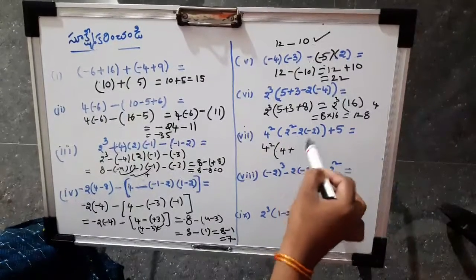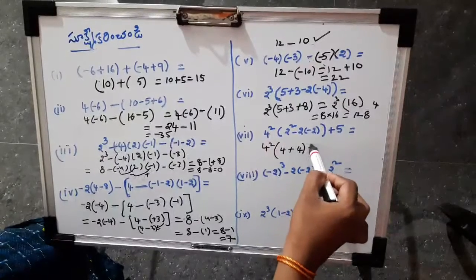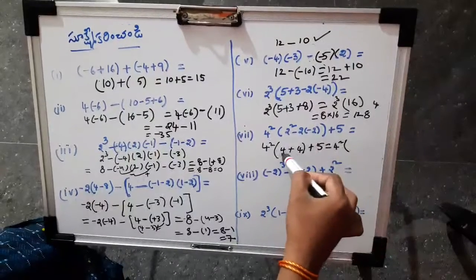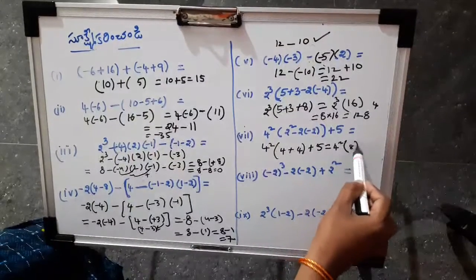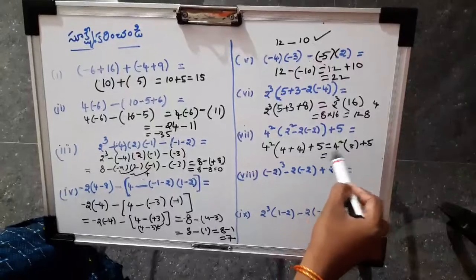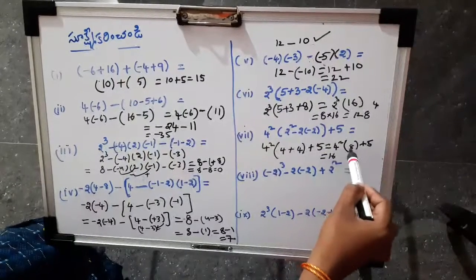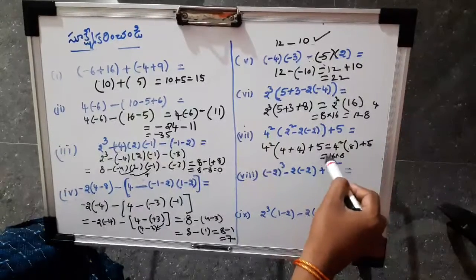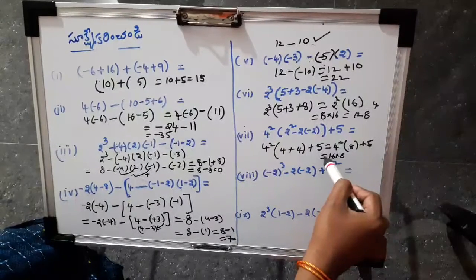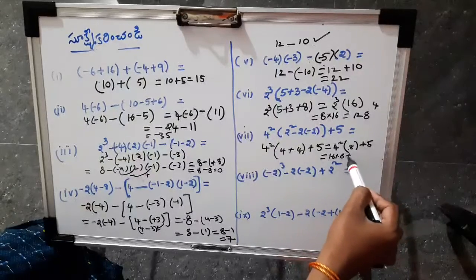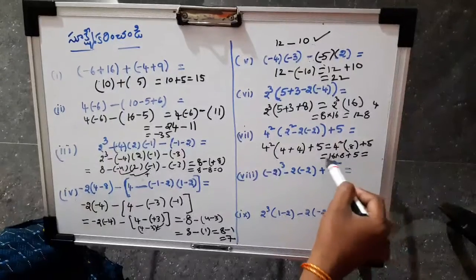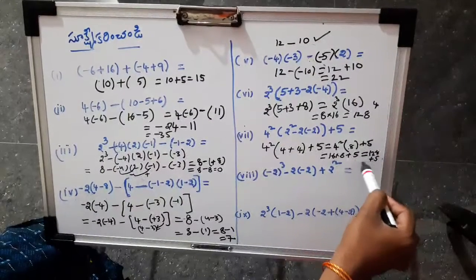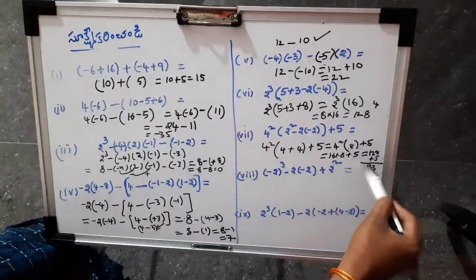Minus into minus here: plus 4 is plus 5. So here we see 4 squared. In brackets, 4 plus 4 is equal. So 4 squared is 16. In brackets we have a plus number. Minus into plus here is minus. Here is minus — that is important. So plus 5. Here we go: 16, 16, 20, 120. 120 plus 5. That is equal. So here is minus 3. That is the problem.